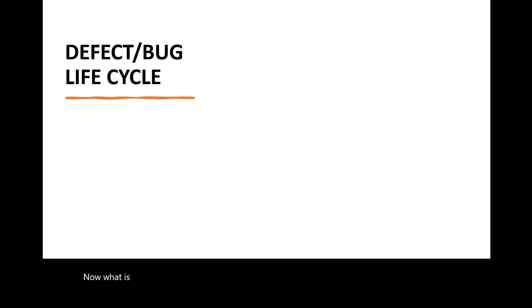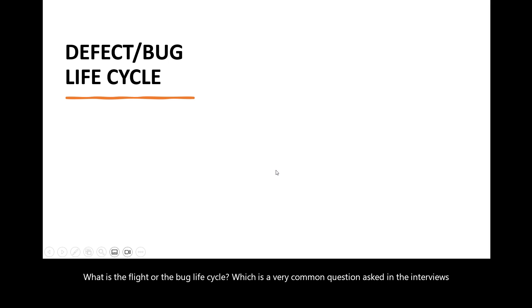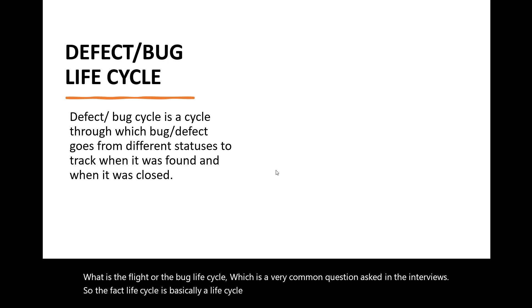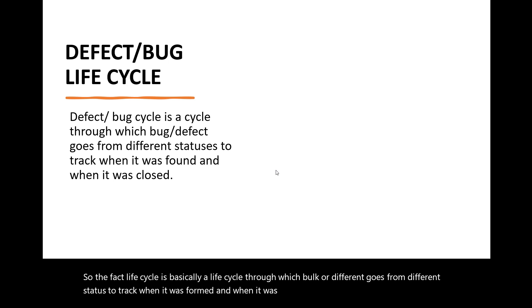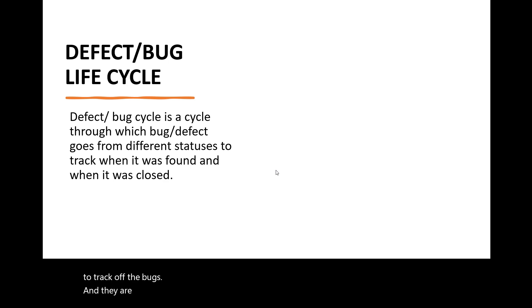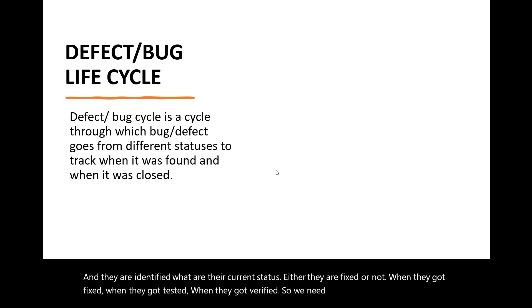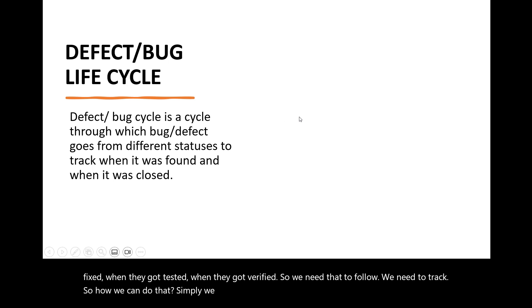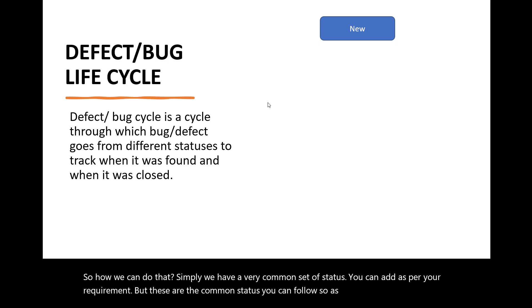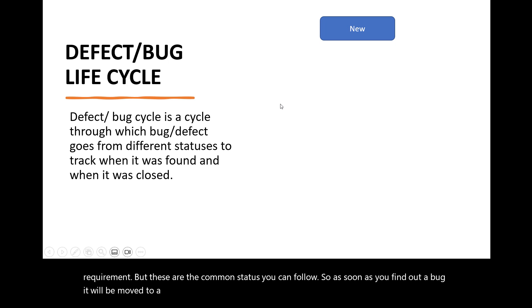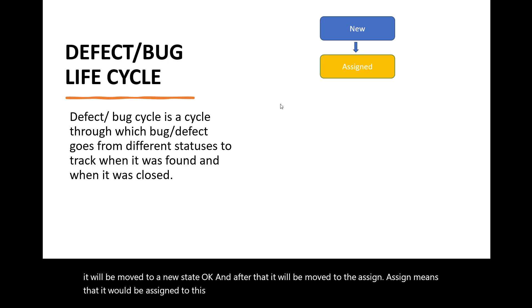Next is the defect or bug lifecycle, which is a very common interview question. The defect lifecycle is a lifecycle through which a bug or defect goes through different statuses to track when it was found and when it was closed. As a development team we need to track bugs — when they are identified, their current status, when they got fixed, tested, and verified. As soon as you find a bug it moves to a 'new' state, and after that it is moved to 'assigned' — assigned to the respective development team.